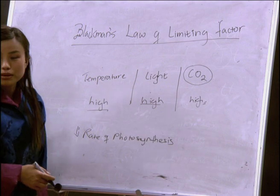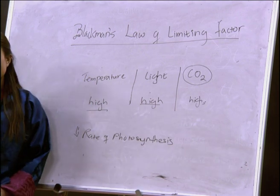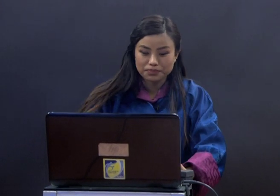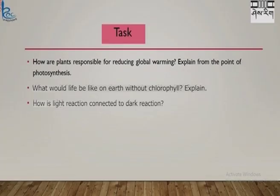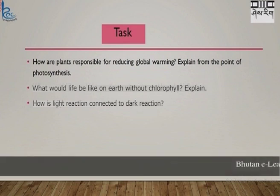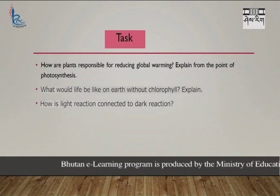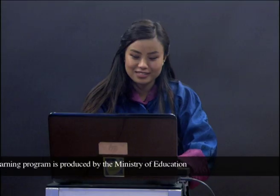This is the concept of Blackman's law of limiting factor. Our lesson has come to an end. I want you to carry out some tasks: How are plants responsible for reducing global warming? Explain from the point of photosynthesis. How would life be on Earth without chlorophyll? How are light reactions connected to dark reactions? I recommend you to stay curious and happy learning. Thank you.